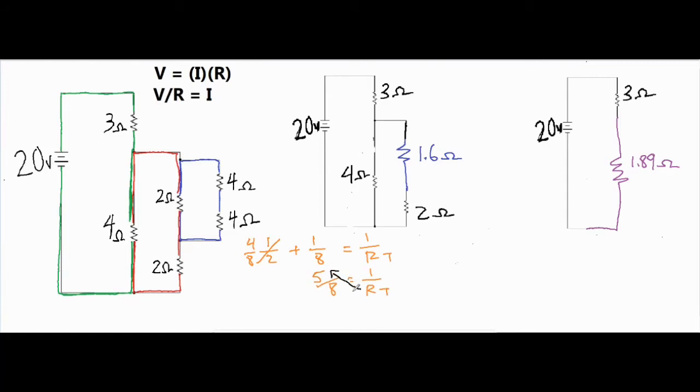Then we have 5 over 8 equals 1 over RT. That isn't our answer - we want to do a quick little cross multiply and then our answer comes out to be 8 over 5 ohms, which in decimal form is 1.6 ohms.